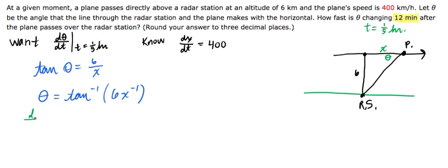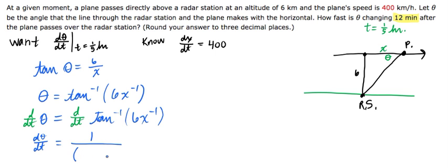I'm going to take the derivative with respect to time of both sides of this equation to get dθ/dt equals the derivative of tangent inverse of this function. By the chain rule, we differentiate the outer function tangent inverse to get 1 over, normally it would be x squared plus 1, but I'm going to put my inside function squared plus 1, times the derivative of 6x^(-1), which would be -6x^(-2) times dx/dt by the chain rule. Let's just keep going with it right here.